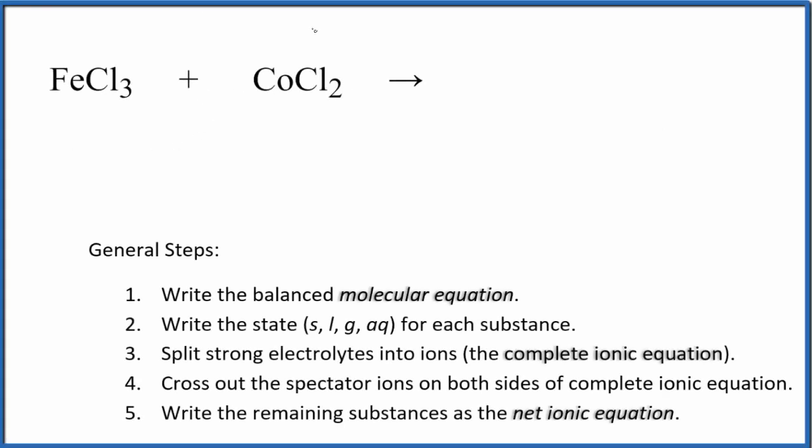In this video we'll look at the net ionic equation for FeCl3 plus CoCl2. This is iron chloride, this is cobalt chloride, and the question really here is whether there is a reaction if a precipitate forms.